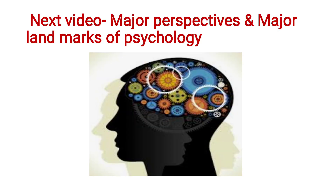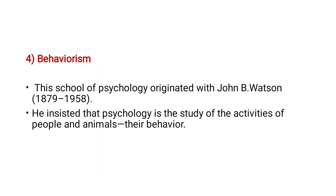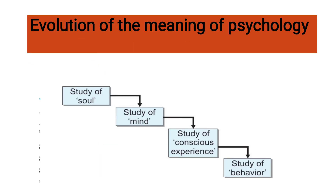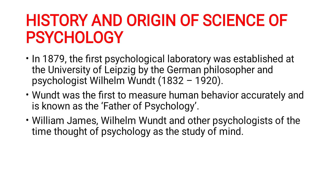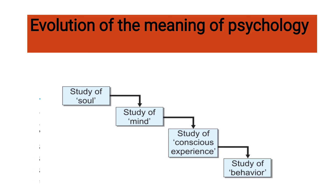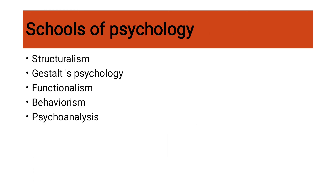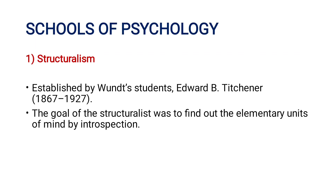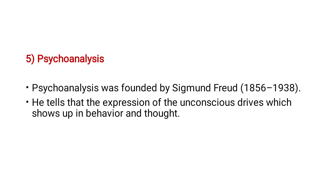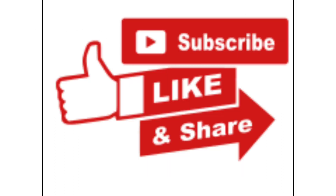My next video will be on major perspectives of psychology and major landmarks in the development of psychology. A quick recap: in this video, we covered the history and origin of the science of psychology, the evolution of psychology from soul to mind to conscious experience to behavior, and the five schools of psychology — structuralism, gestalt psychology, functionalism, behaviorism, and psychoanalysis. If you like this video, please give a thumbs up, share, and subscribe to Science Easy Tech channel. Thank you, friends.